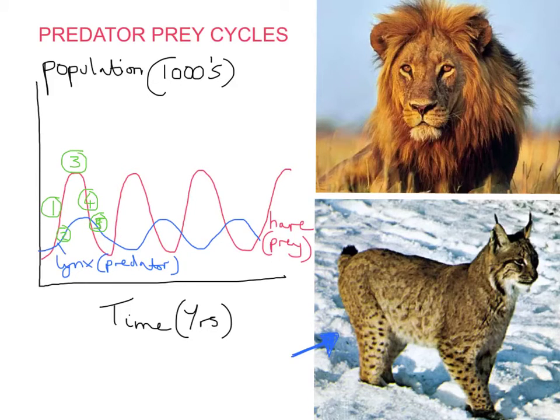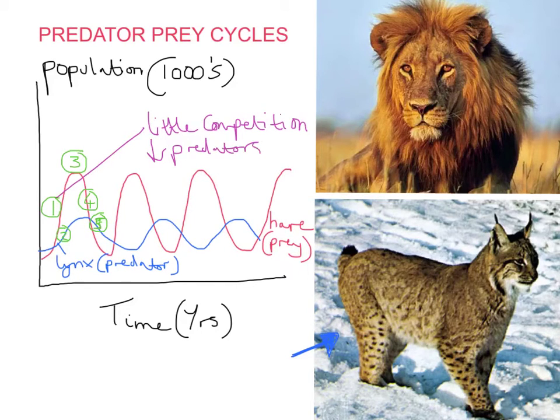So for number one, if we just analyze this, I'm going to just put certain marks over the graph. For number one, you have very little competition between prey and a very low number of predators. So that's why you get a prey population increase.